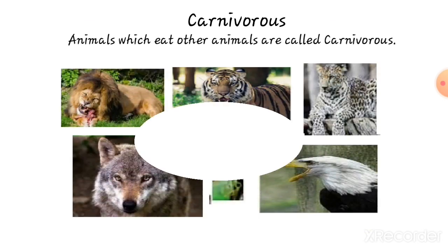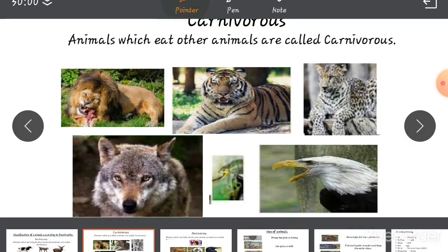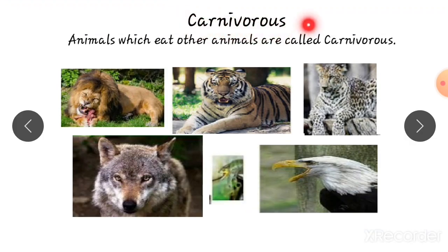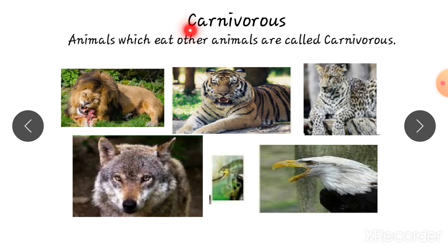Next, carnivores. Animals which eat other animals are called carnivores. Examples of carnivores are lion, tiger, leopard, wolf, frog, and vulture. These animals eat other animals, so this type of animals are called carnivores.